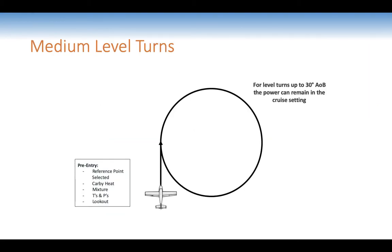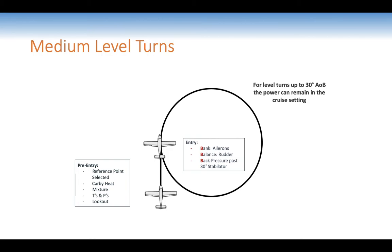For a medium level turn: pre-entry — reference point selected, lookout, carby off, mixture full rich, T's and P's green, and lookout. Clear in the direction of turn. Entry: bank, balance, back pressure — a coordinated manoeuvre; make sure you're trimmed in straight-level flight first. Then do attitude, lookout, attitude, performance. Check pitch and bank, look out in direction of turn, and maintain height and balance.